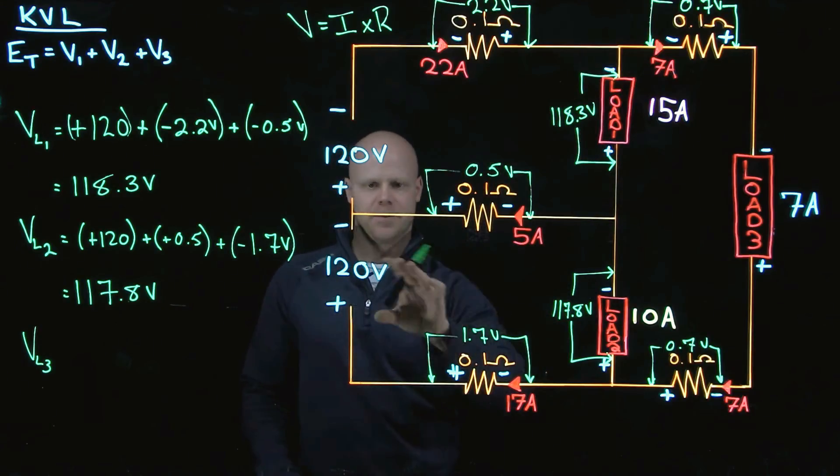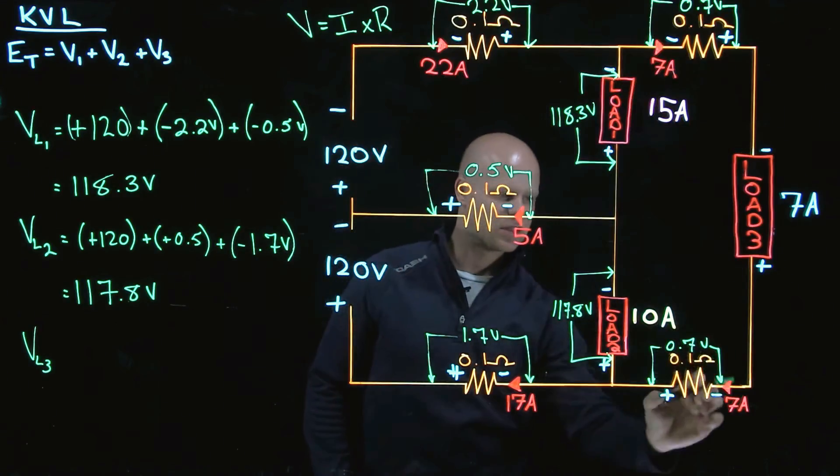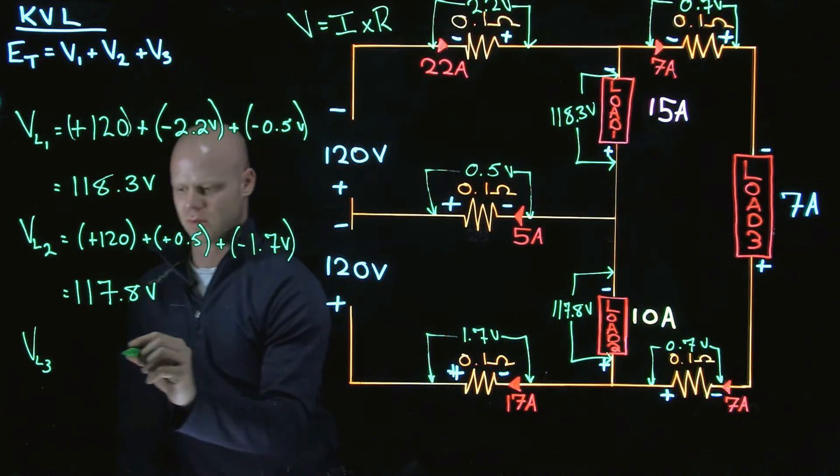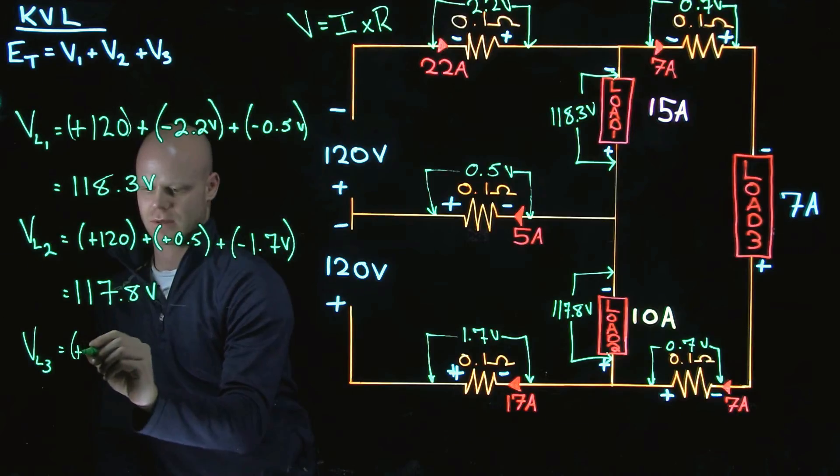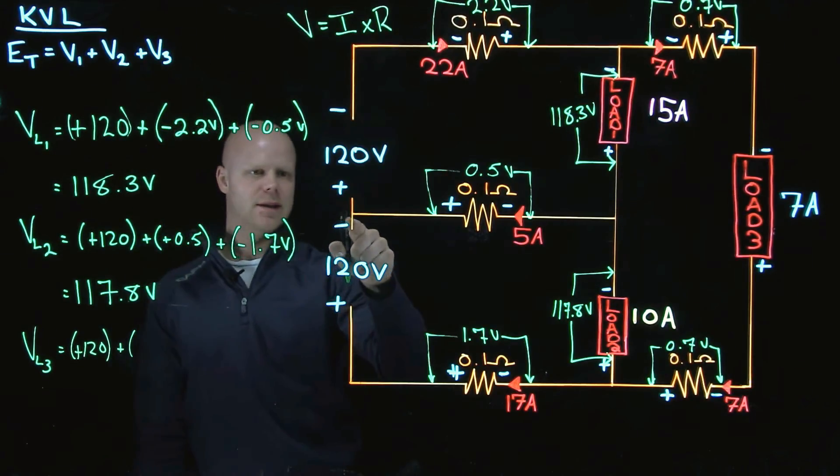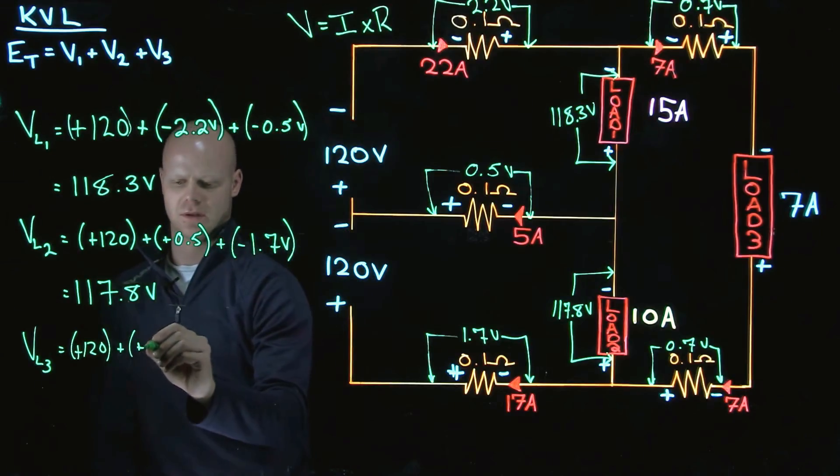So for me, I like to start from the source and I like to do the entire perimeter. So I will have a positive 120 plus a positive 120.